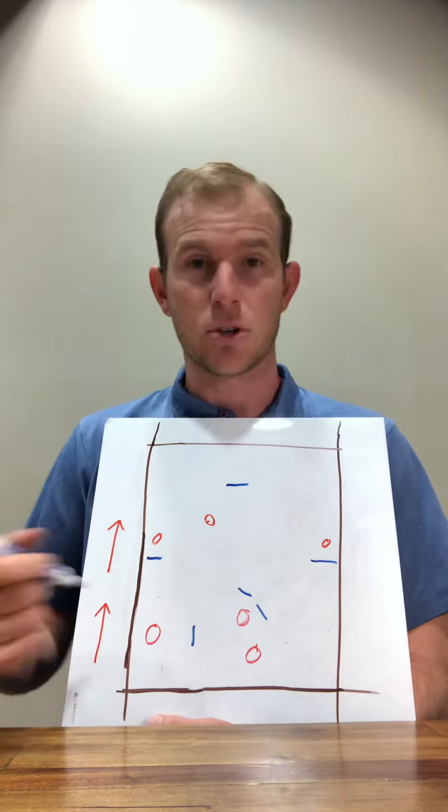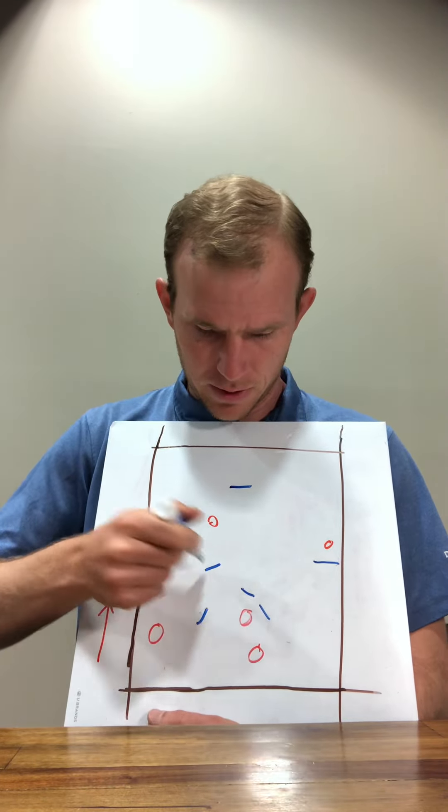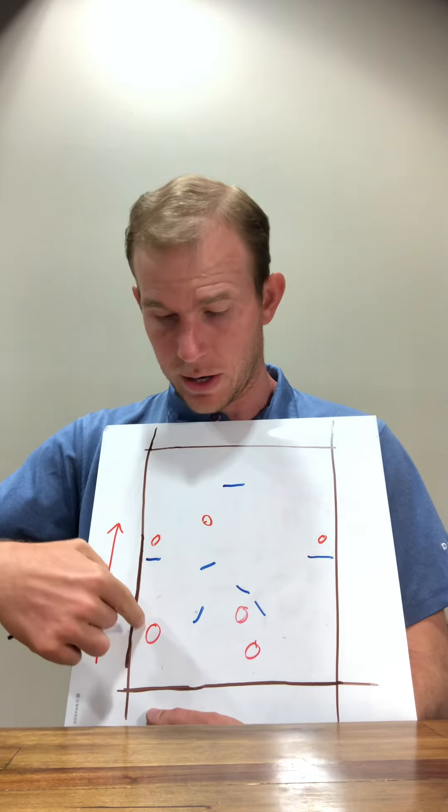The other point is running that trap option. So, let's just say that the disc, here's your defense, the disc dumped, and it swung, and it got all the way to here.